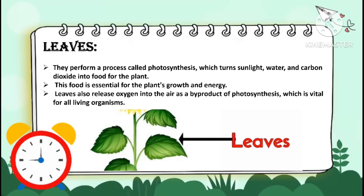which turns sunlight, water, and carbon dioxide into food for the plant. This food is essential for the plant's growth and energy. Leaves also release oxygen into the air as a byproduct of photosynthesis, which is vital for all living organisms.